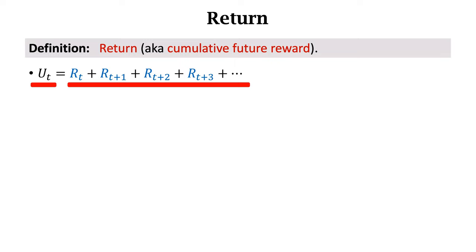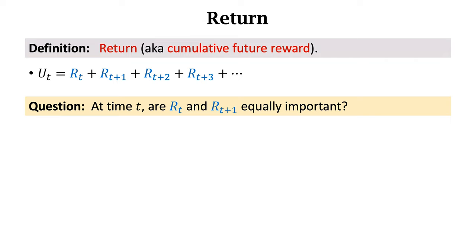In practice, discounted return is more popular than the return defined here. I'm about to introduce discounted return. Think of this question: at time t, are rewards rt and rt+1 equally important?